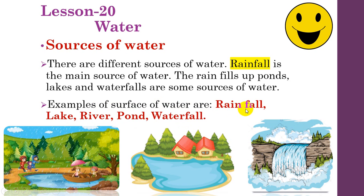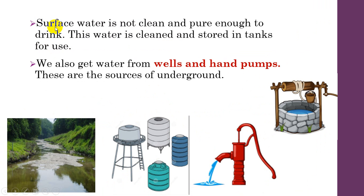Rain falls and the water collects. Examples of surface water include lake, river, and waterfall. Surface water is not clean and pure enough to drink.